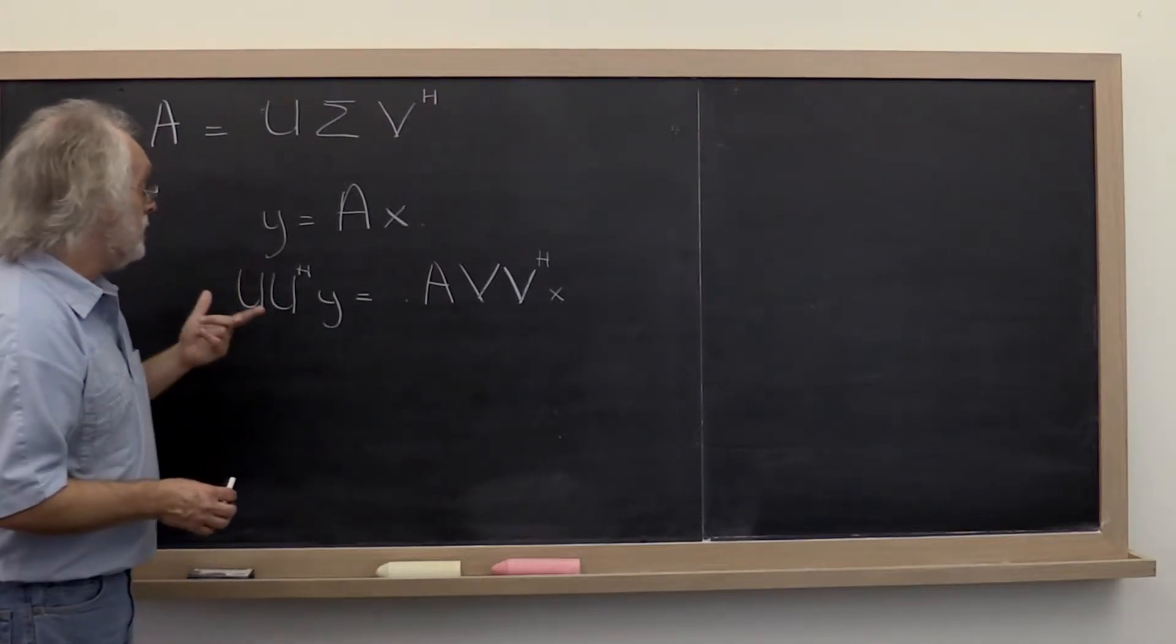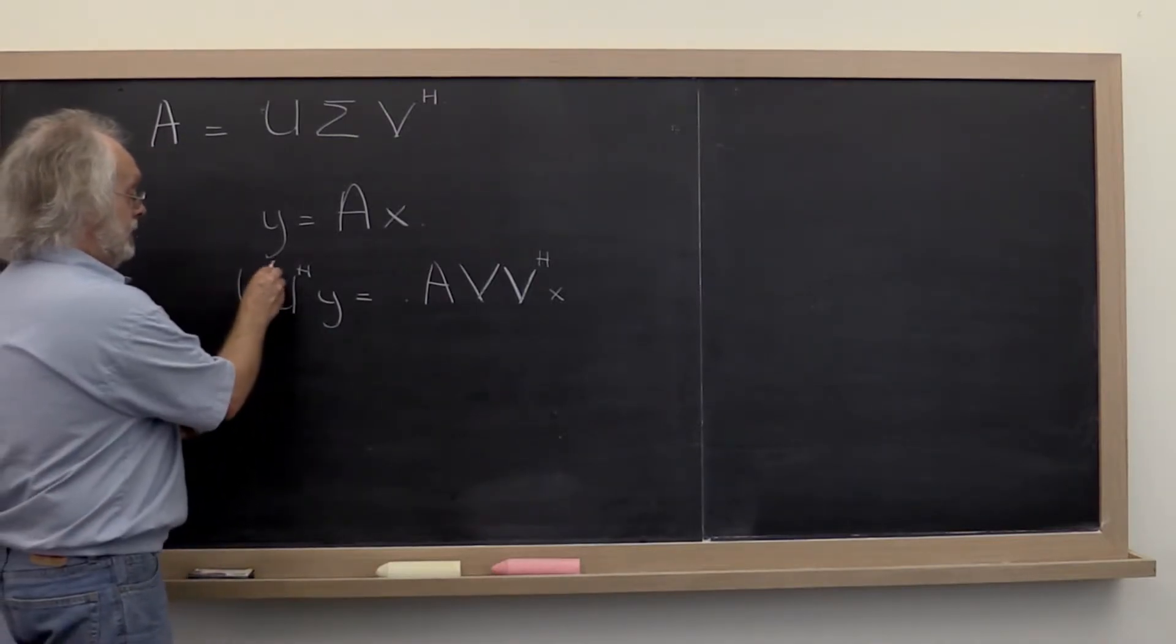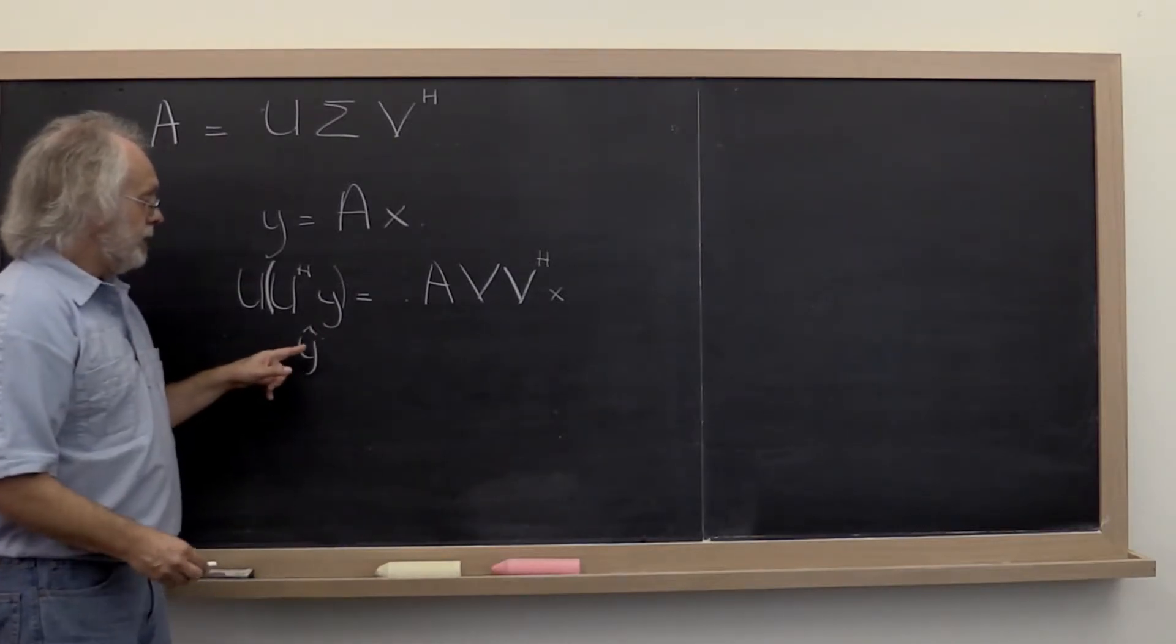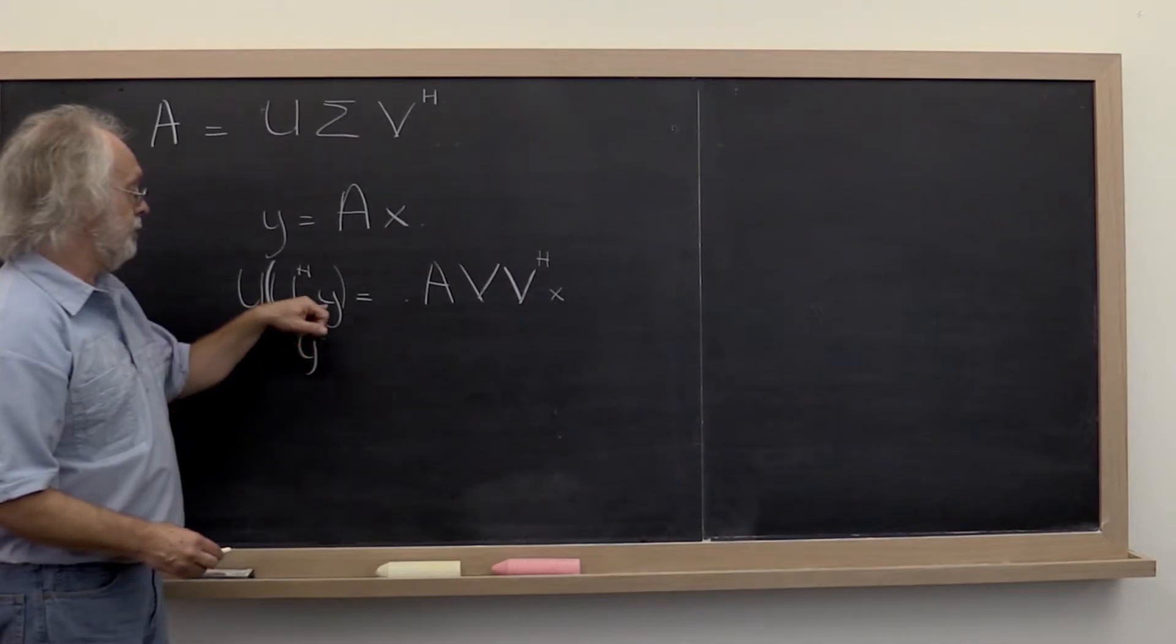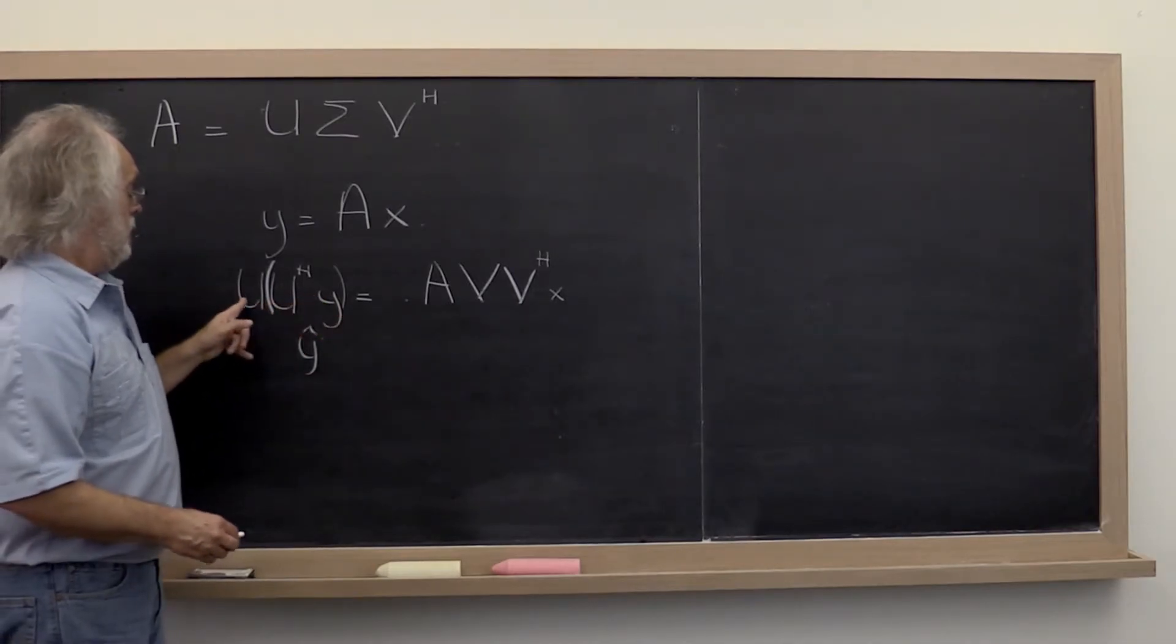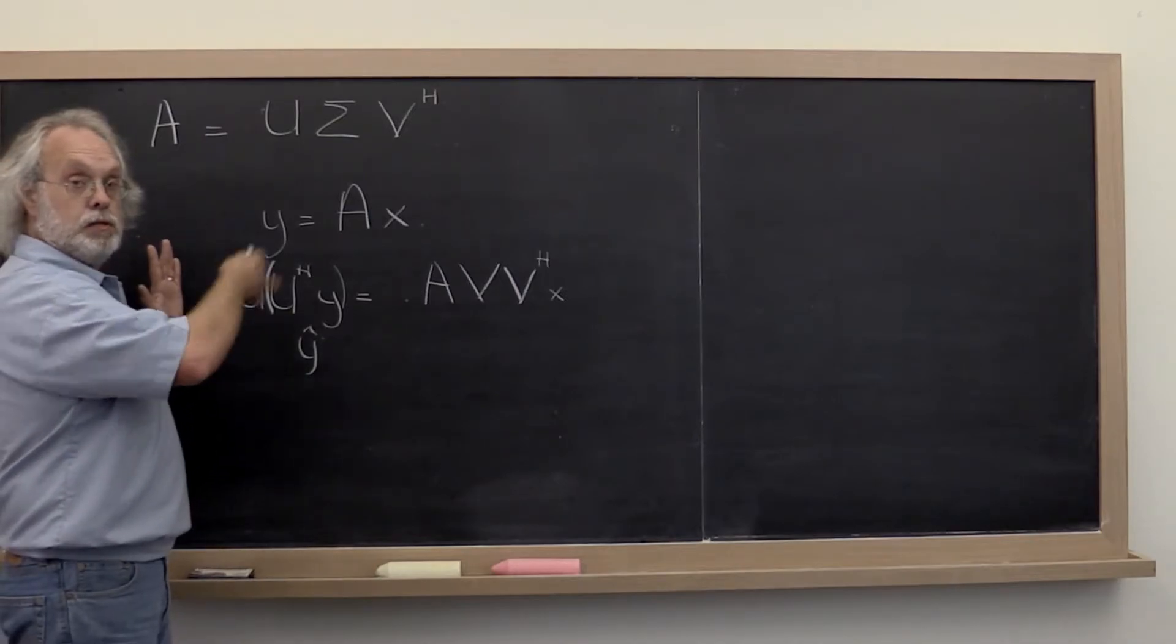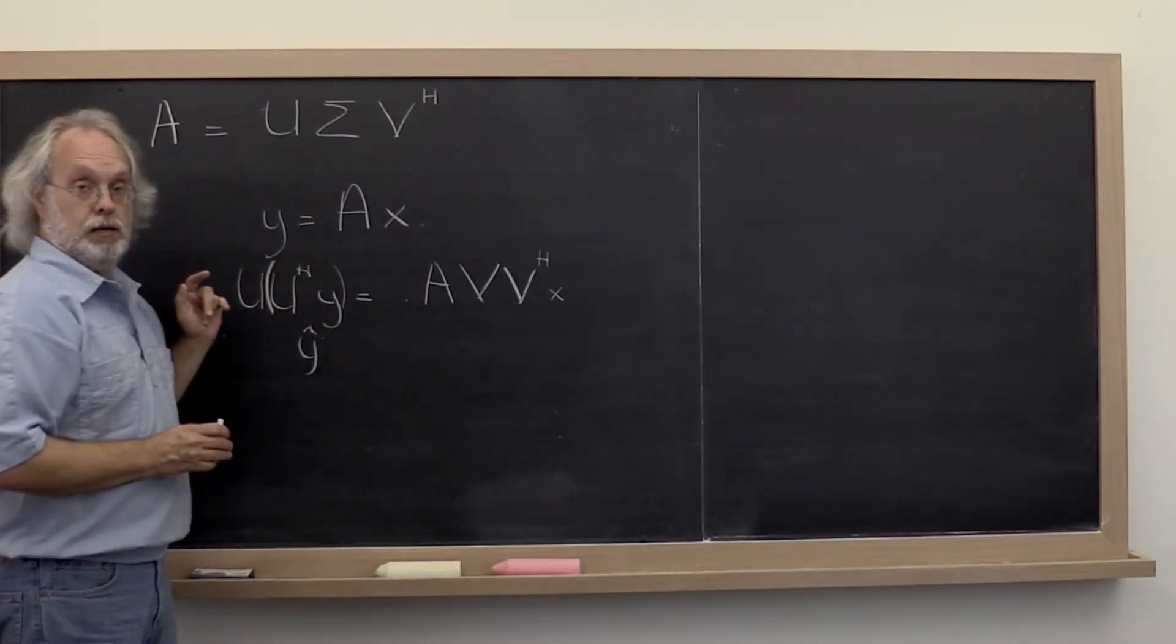Now we saw that this vector right here, let's call it y hat, is just the vector of coefficients when you view vector y in the orthonormal basis that is the columns of u.